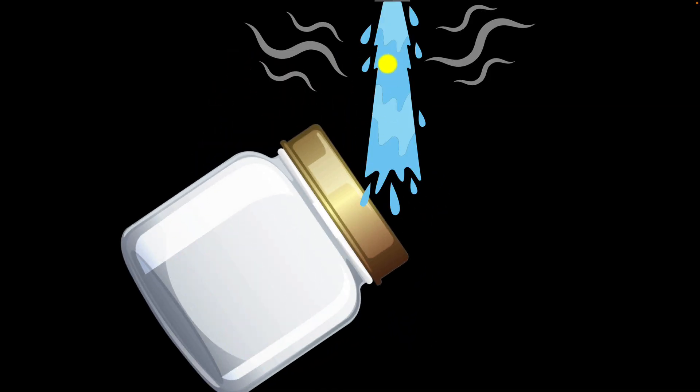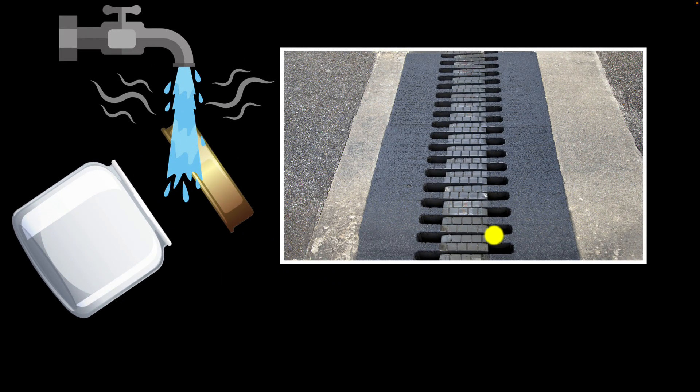For example this is the reason why when a metallic lid is stuck you can just pass it over hot running water as a result the lid will expand and then you can easily open it. This is also why bridges use expansion joints to compensate for the expansion that would happen during the summer.